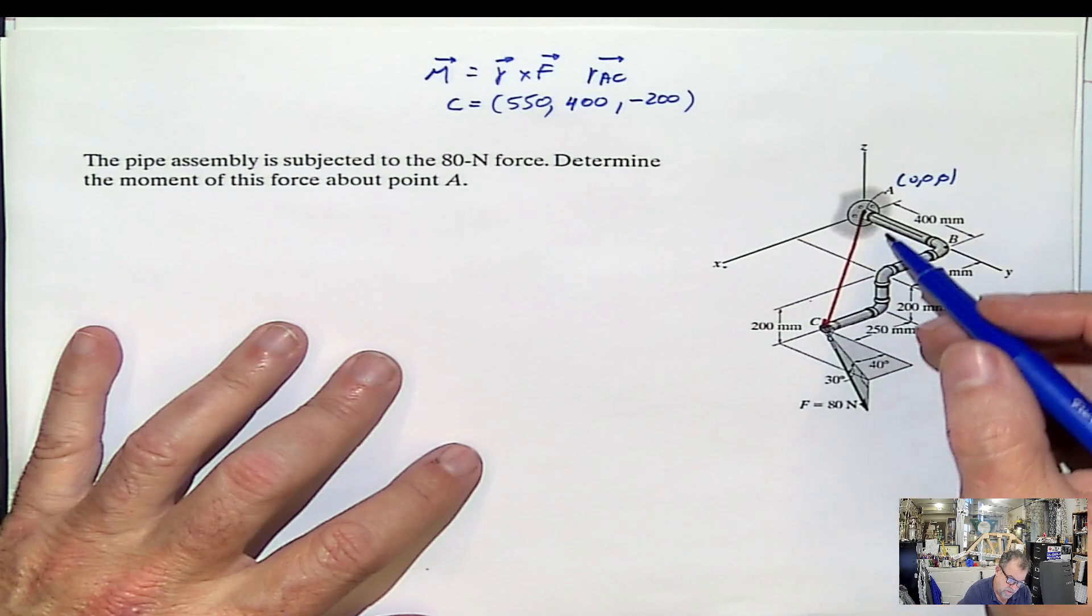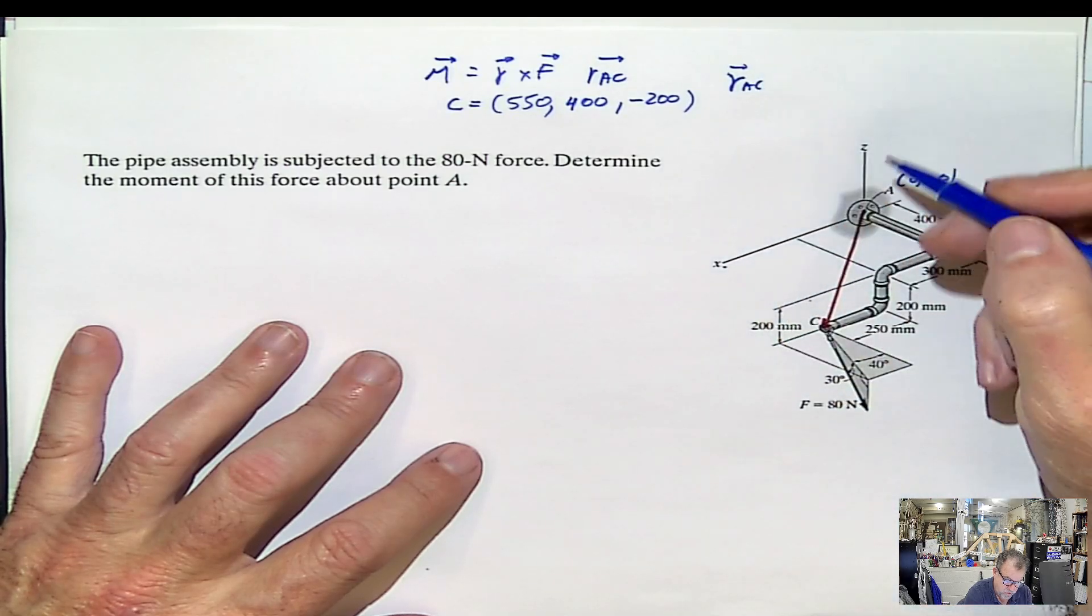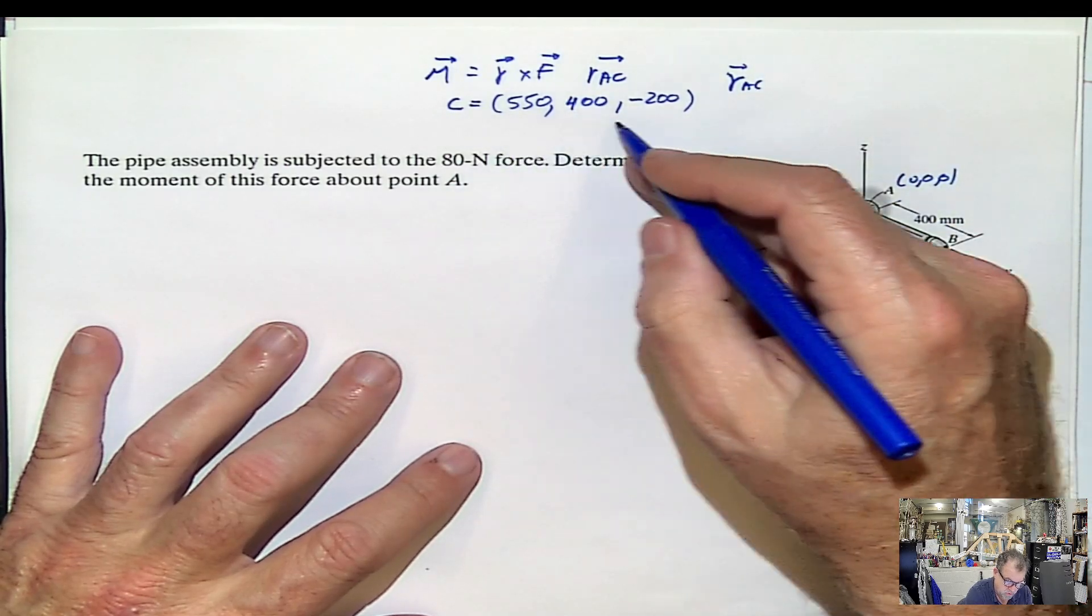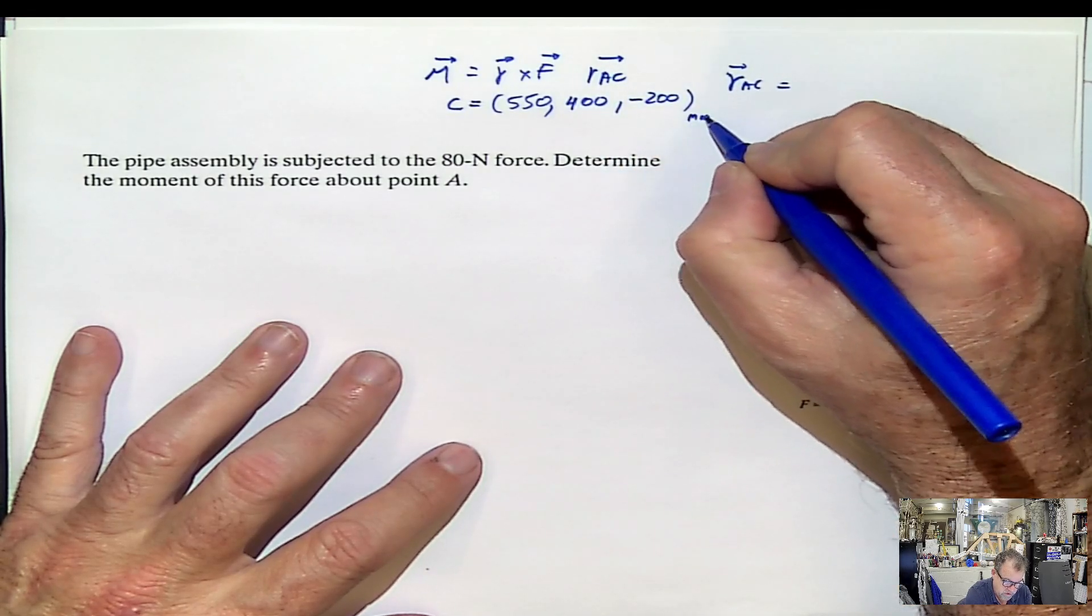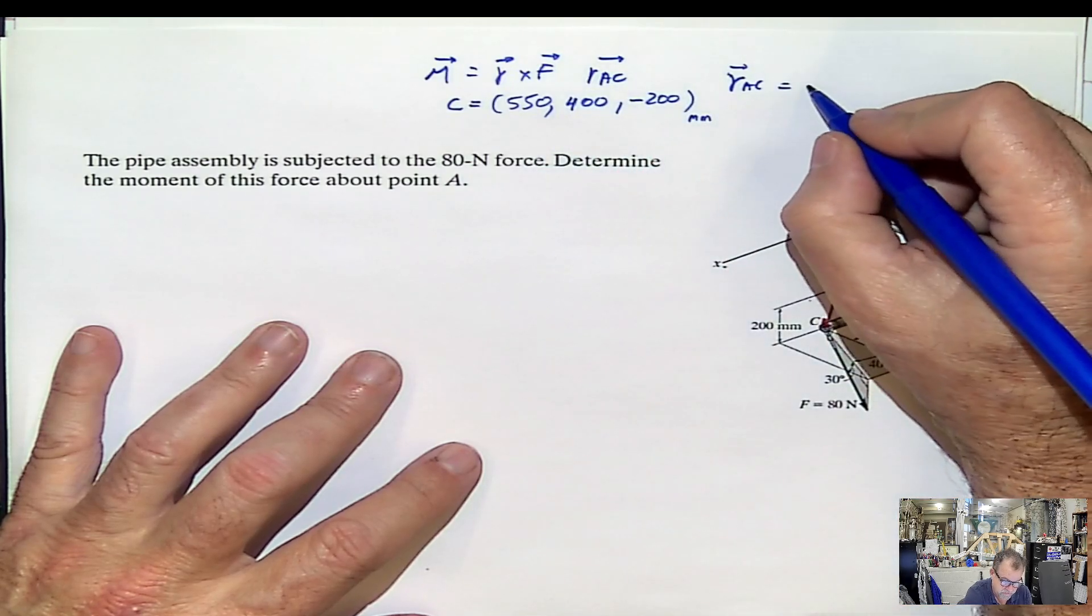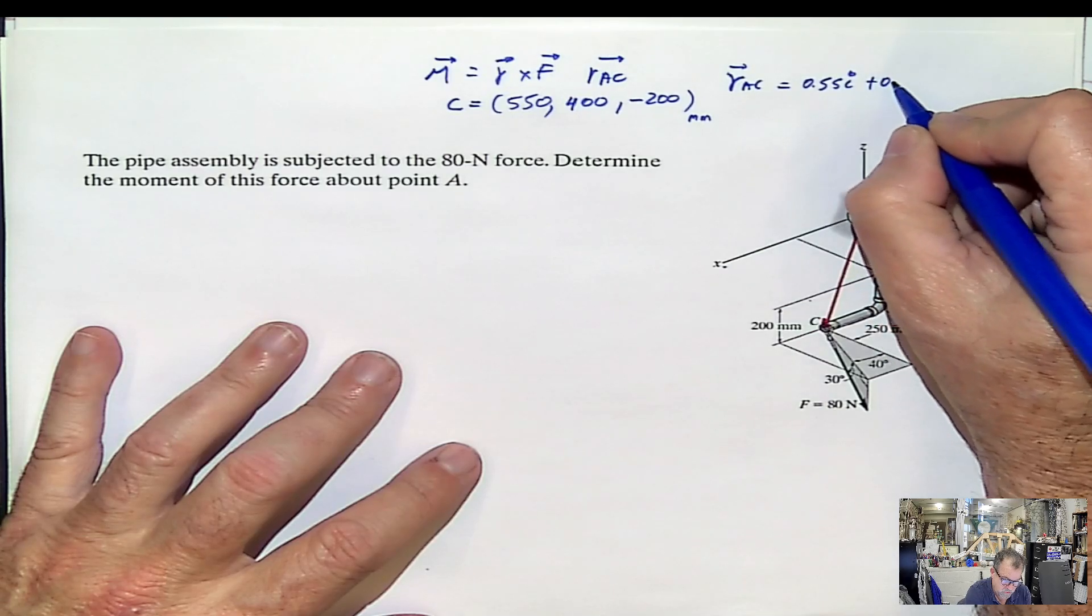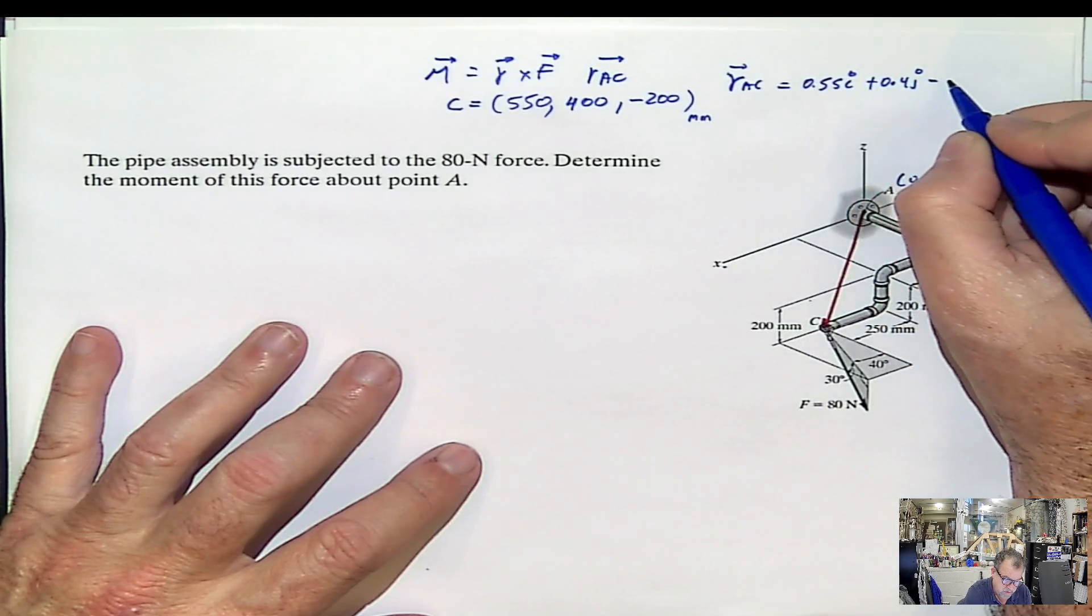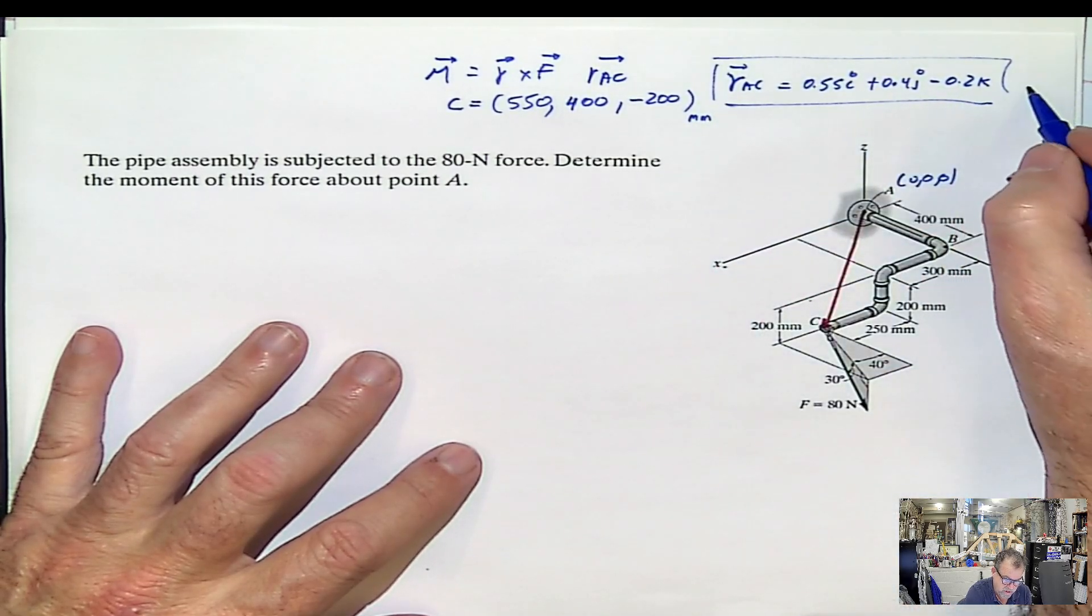Now it's going to be C minus A, meaning my position vector AC will be coordinates of C, which are those minus coordinates of A. So let's convert this into meters, dividing it by 1,000. So 0.55i plus 0.4j minus 0.2k. You already have these R in meters.